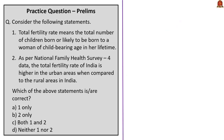This question is with respect to Total Fertility Rate (TFR). The first statement: TFR means the total number of children born or likely to be born to women of childbearing age in her lifetime — correct. The second statement: as per NFHS-4 data, the TFR of India is higher in urban areas compared to rural areas. This is wrong — it is the other way around: TFR is higher in rural areas compared to urban areas. Only the first statement is correct — answer is option A: one only.